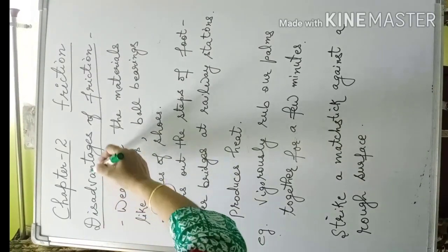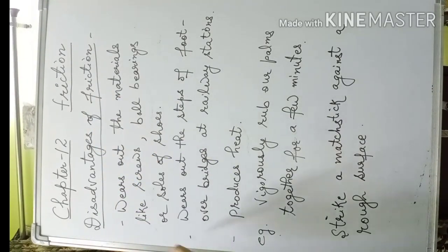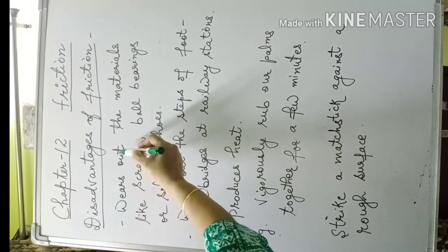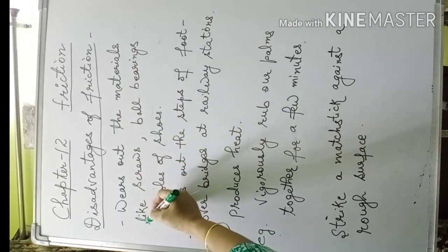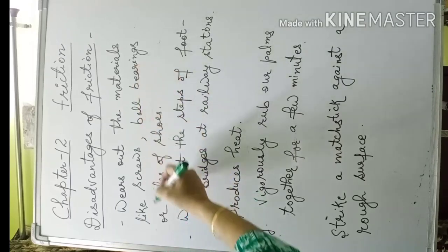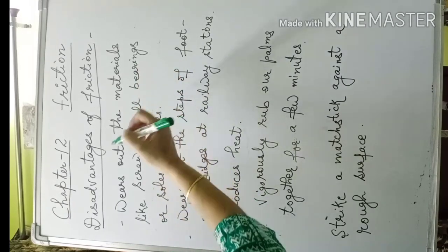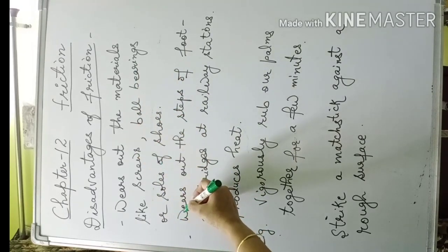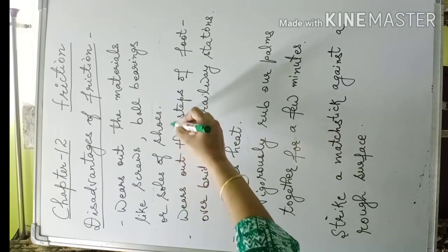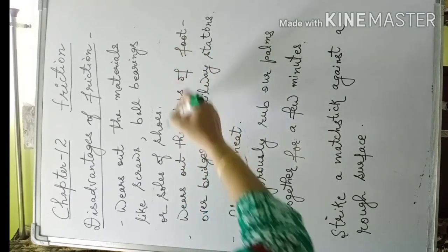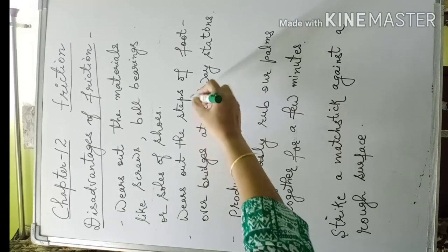Now disadvantages of friction. Friction wears out materials like screws, ball bearings, or soles of shoes. Friction wears out the steps of foot over bridges at railway stations.